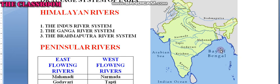Next, Godavari — it is also called Vriddhaganga. It flows through the states of Telangana and Andhra Pradesh before joining the Bay of Bengal.